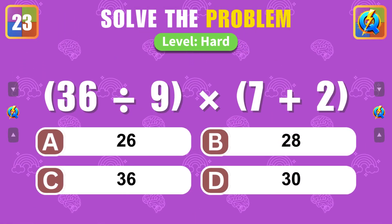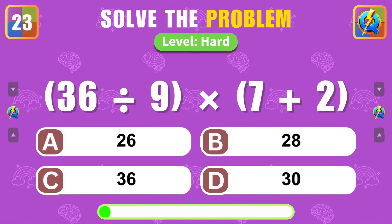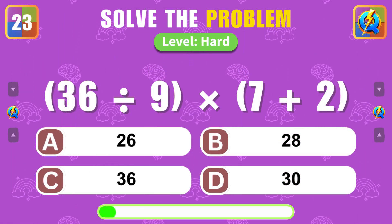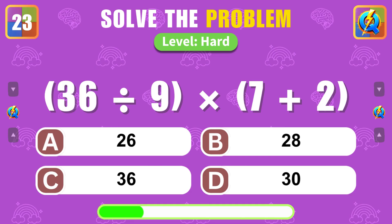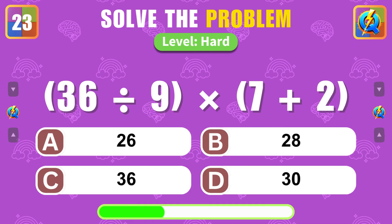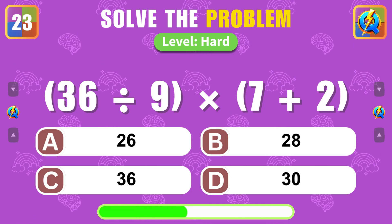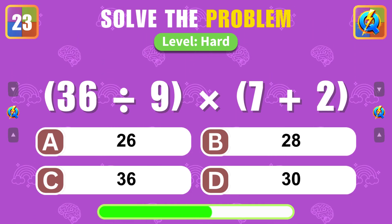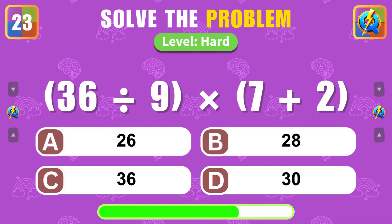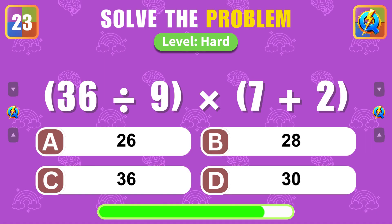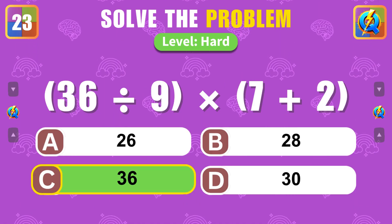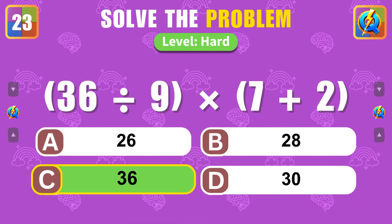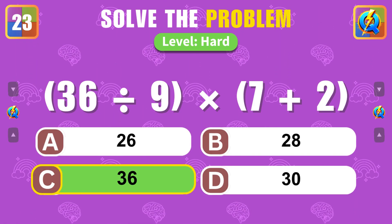What is the result of 36 divided by 9 times 7 plus 2? Excellent, the answer is 36.